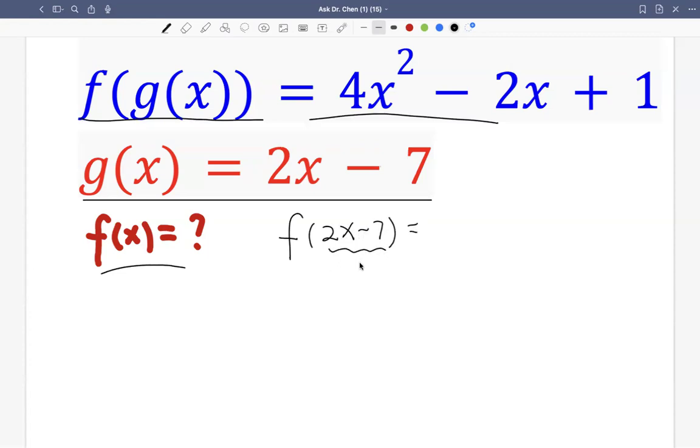So this is the input of f. So we want to rewrite this term in terms of 2x minus 7 squared, and this term in terms of 2x minus 7. So how do we do that?